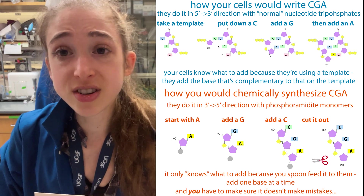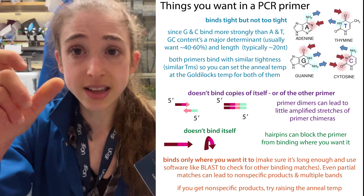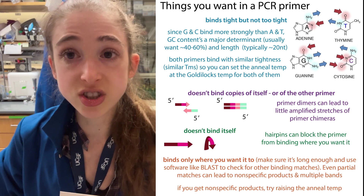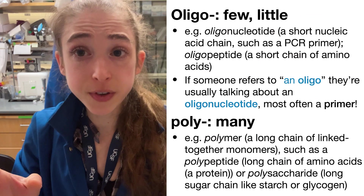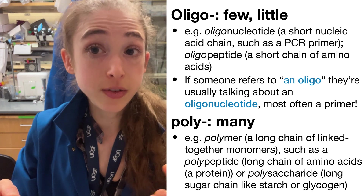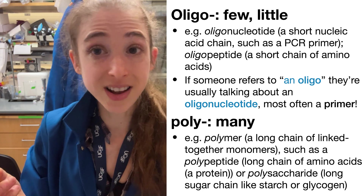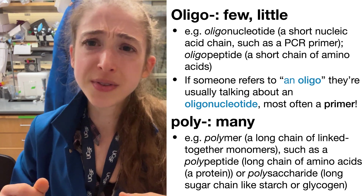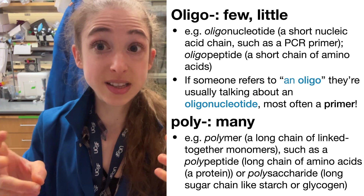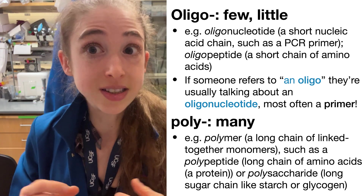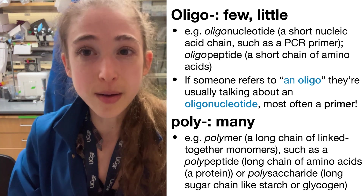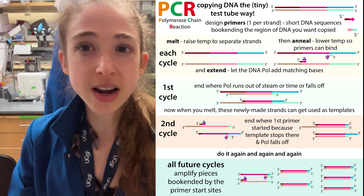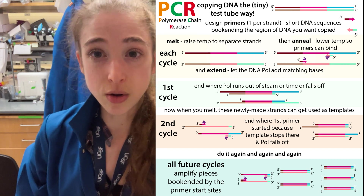Basically, you can just go design primers — you design them to match specific sequences, and they can do all sorts of really fancy things. Remember, oligo just means few or little, and poly means many. If you hear the word oligo used as a word and not just a prefix, you're probably talking about an oligonucleotide — a short piece of DNA or RNA. And if they don't mention any other specifics, like specifically saying an RNA oligo, they're probably talking about a DNA oligonucleotide and a primer.